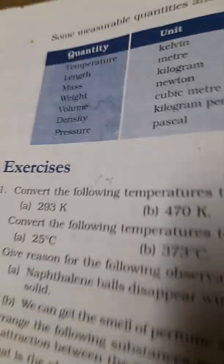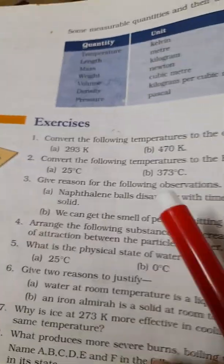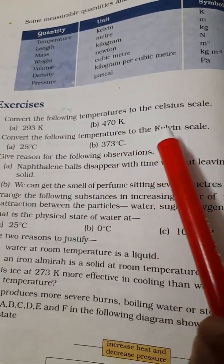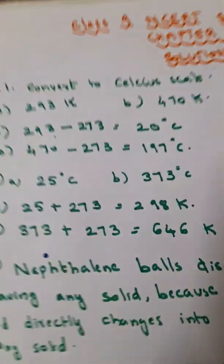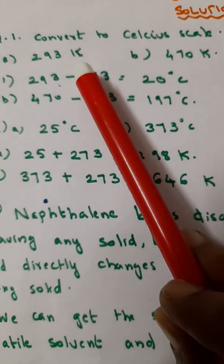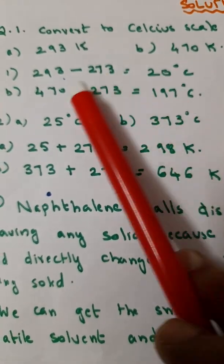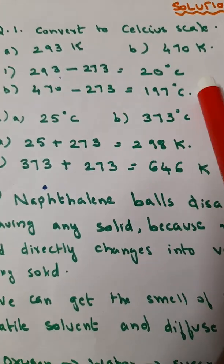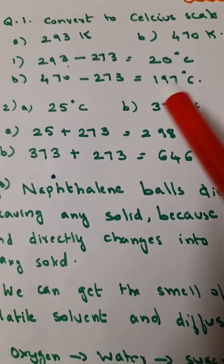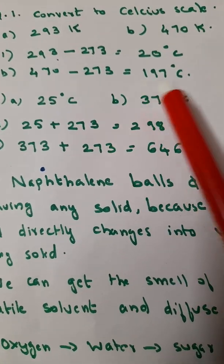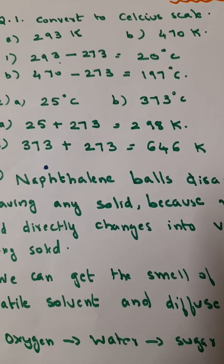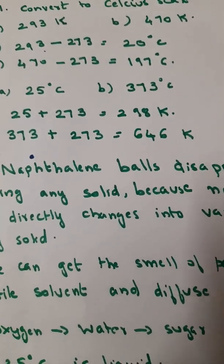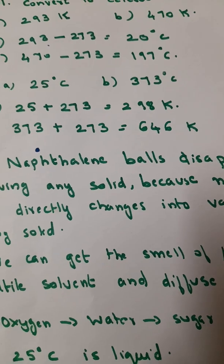What is the first question given over here? The first question is convert the following temperature to Celsius scale: 293K and 470K. How can you convert to Celsius scale? 293K is just 293 minus 273, that is 20 degrees Celsius. 470K, that is 470 minus 273 is 197. See, 273K plus or minus 273, that is how you convert Kelvin to degree Celsius.